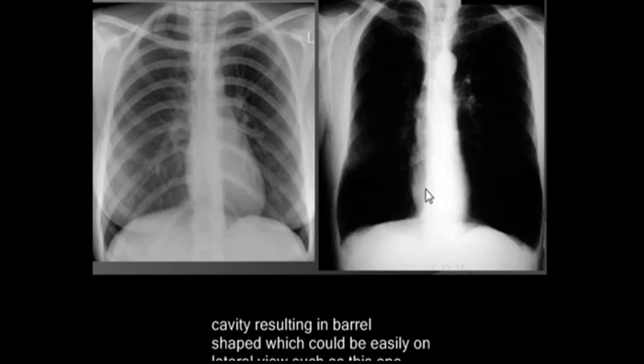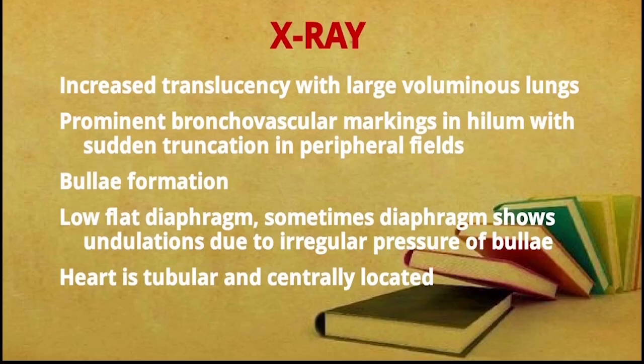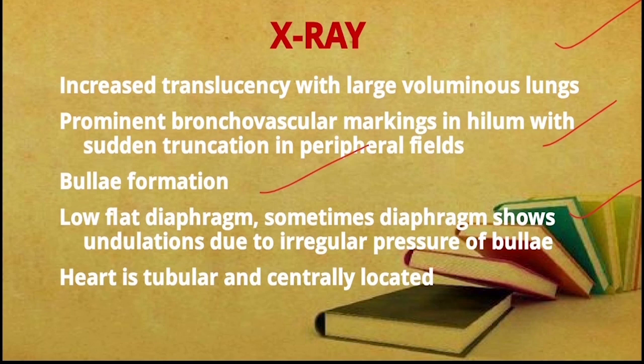In the lateral or transverse view, you can appreciate the barrel-shaped chest and flattened diaphragm more clearly. Key X-ray findings in emphysema: increased translucency with large voluminous lungs, predominant bronchovascular markings in the hilar region, bullae formation, low flat diaphragm, and a tubular, centrally located heart.